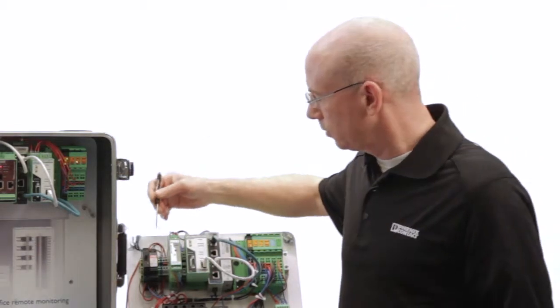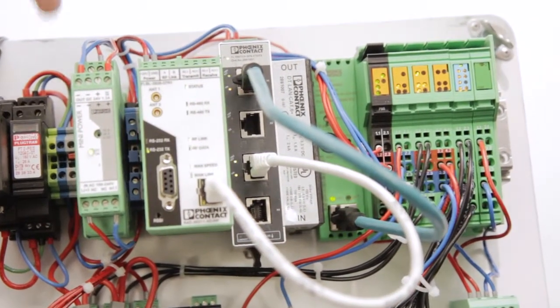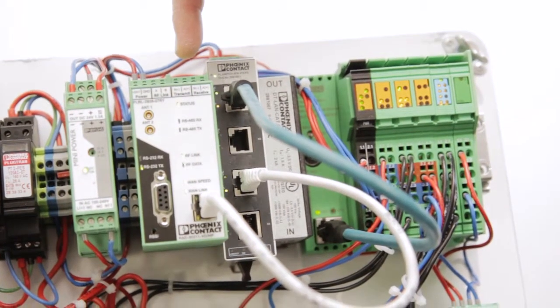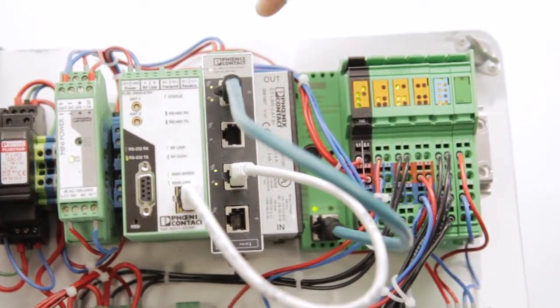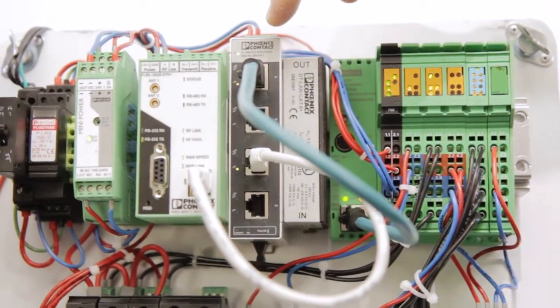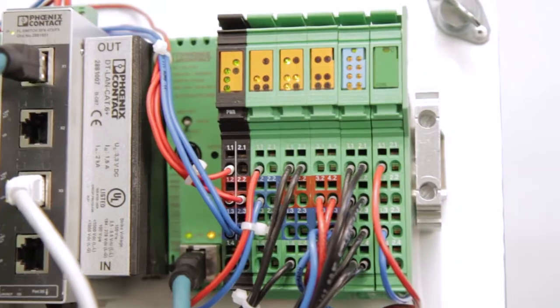Terminal blocks, surge protection, power supplies, wireless radio 802.11 Ethernet radio, going through an FL switch, M-Guard VPN, and an ILC controller, I.O.